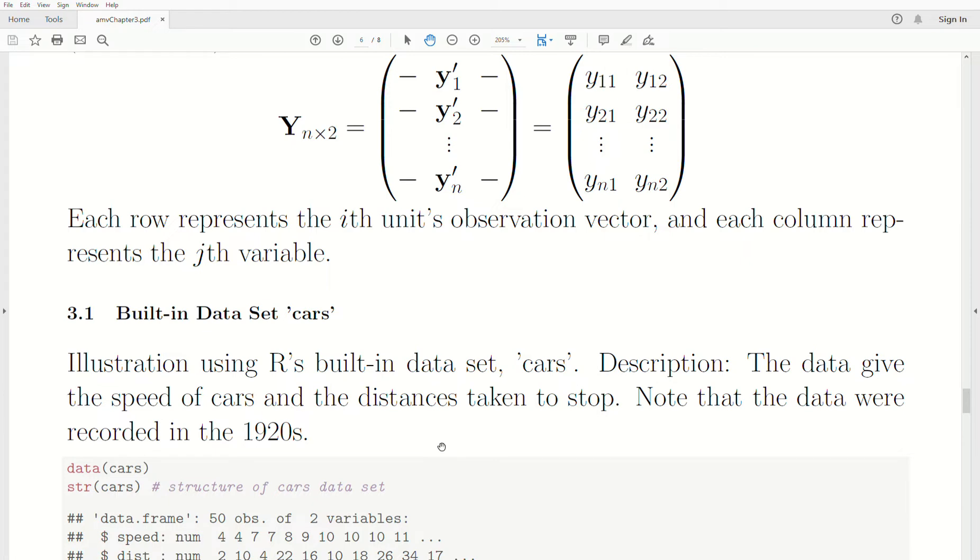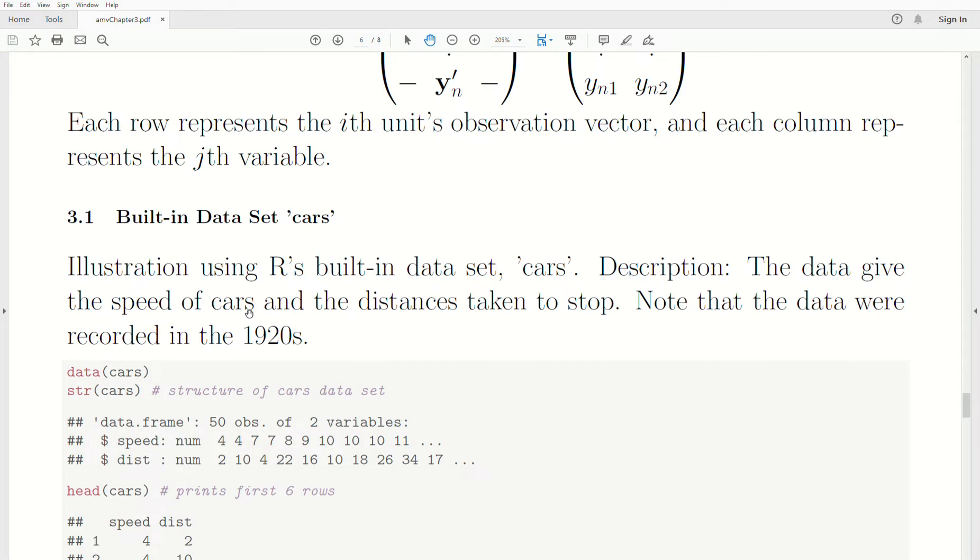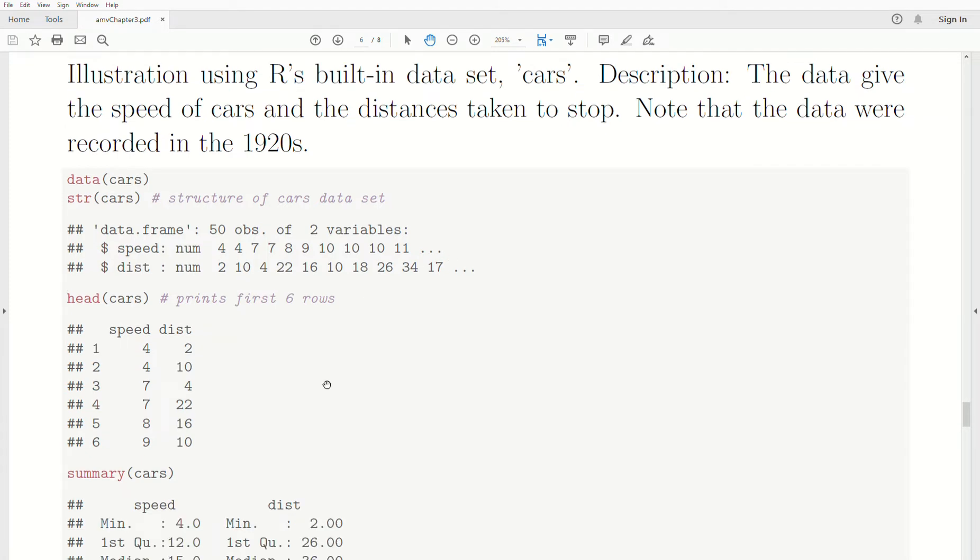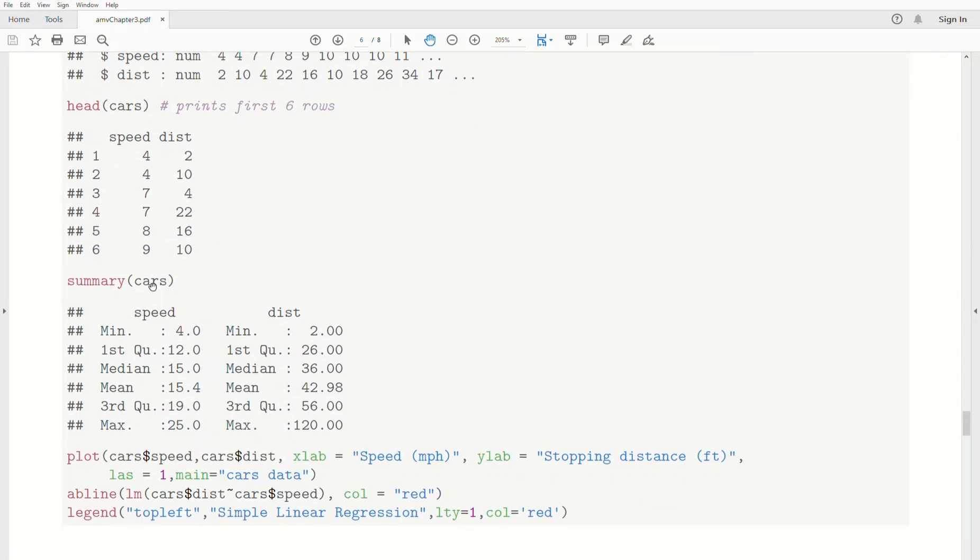There are some built-in datasets in R that we're going to make use of in these videos. The first one is cars. The description is the data give the speed of cars and the distances taken to stop. Note that the data were recorded in the 1920s. STR is the structure of cars, so it prints out a summary. It's a data frame, 50 observations, two variables. First variable is speed, second is distance, and they're numeric. You can type head cars and it prints the first six rows of the data frame. If you type summary cars, then it goes variable by variable and provides a summary, the mean, the quartiles.